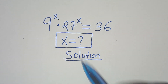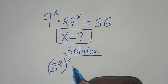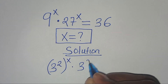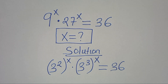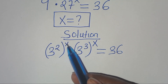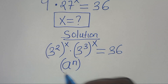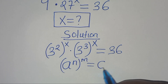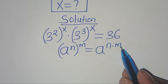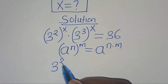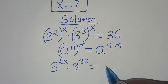We can express 9 as 3 to the power of 2, raised to the power of x, times 27, which is 3 to the power of 3, raised to the power of x, equals 36. Using the property (a^n)^m = a^(n·m), we get 3 to the power of 2x times 3 to the power of 3x, equals 36.